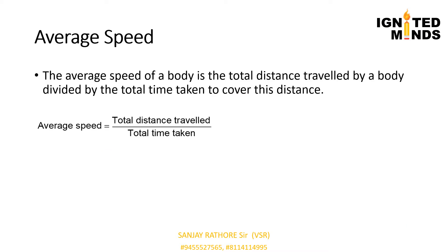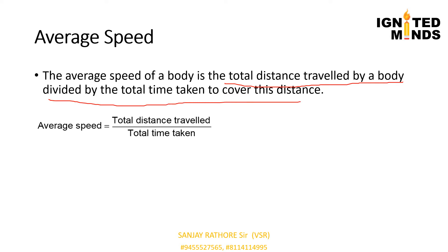Now we will study about average speed. Usually buses, cars and trains do not move with a uniform speed — they move with non-uniform speed. For example, when a bus starts its journey from a bus stand, it moves slowly and then its speed increases. If it enters a crowded road its speed decreases, then increases again. After travelling a few kilometres it may have to stop, so its speed decreases again. Thus the bus is not moving with the same speed throughout the journey. In such a situation we find the average speed, which is the total distance travelled divided by the total time taken.